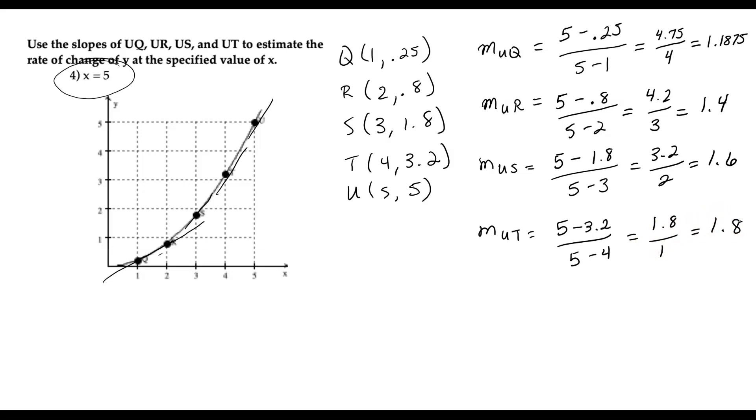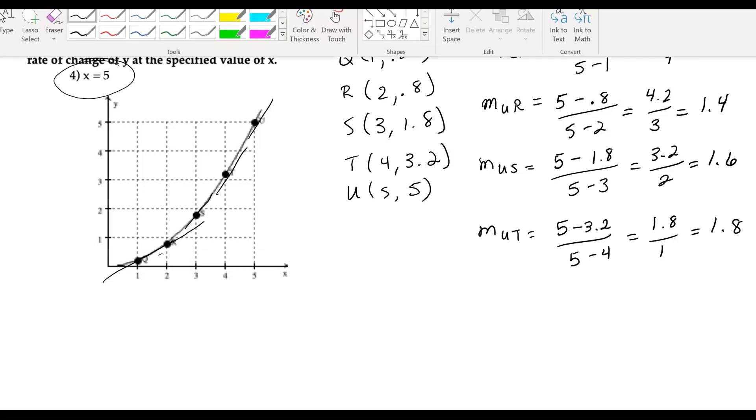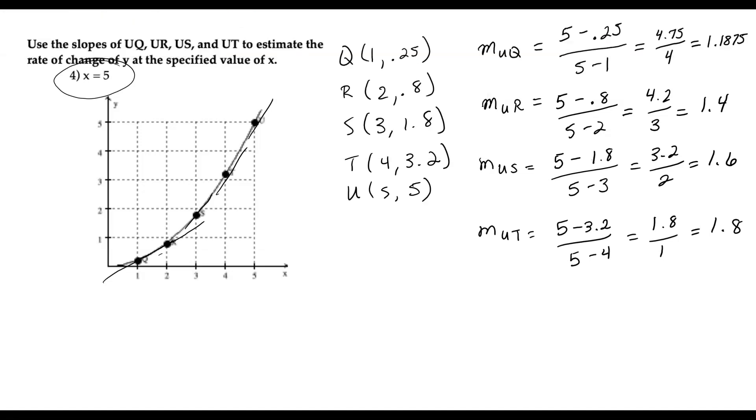So what I want you to do is I want you to notice these values. What are they getting closer and closer to? The closer that we can get to the value 5 right here, the closer you see these tangents, the closer that I get, my slope is approaching a certain number. I want you to think about that for a second. What does it look like it's approaching as we go downward?